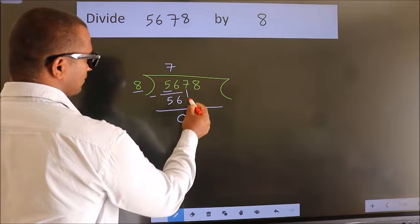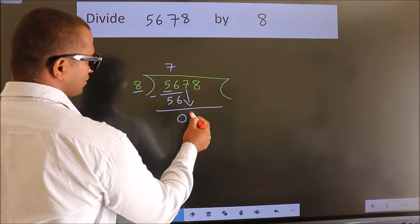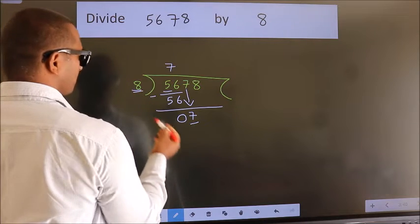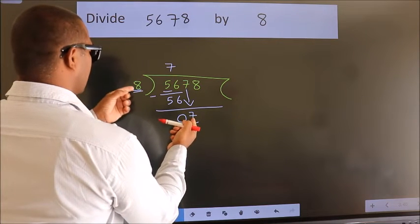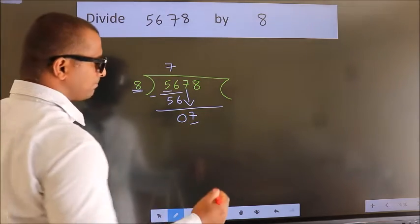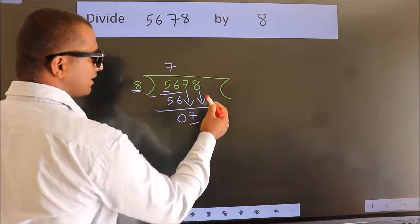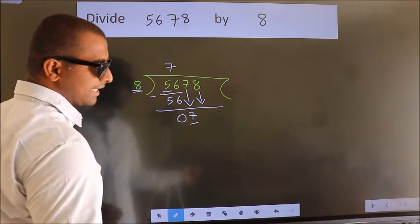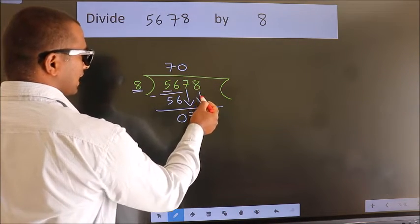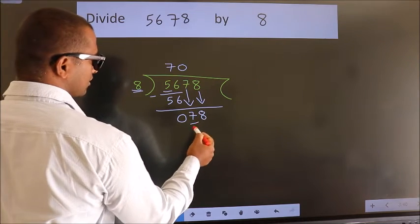After this, bring down the next number. So 7 down. Here we have 7, here 8. 7 is smaller than 8, so we should bring down the second number. And the rule to bring down the second number is put 0 here. Then only we can bring down this number. So 78.